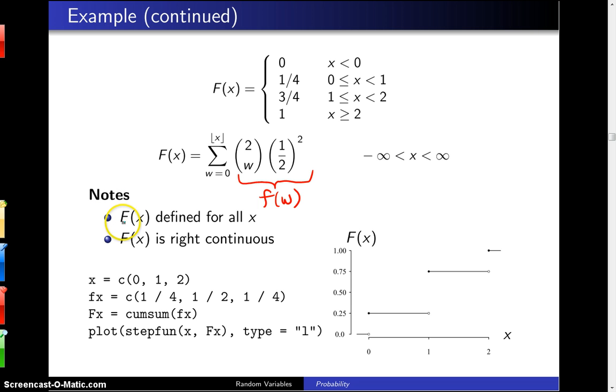So a couple notes. First of all, F of X is defined for all X, and F of X is a right continuous function.